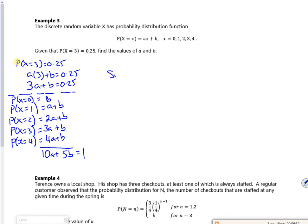So if I solve simultaneously, 3a + b is a quarter, and 10a + 5b is 1. Then that would give me, if I solve them simultaneously, a is 0.05 and b is 0.1. So that's quite nice. I don't even need to draw the table. I just got my zero then, didn't I?